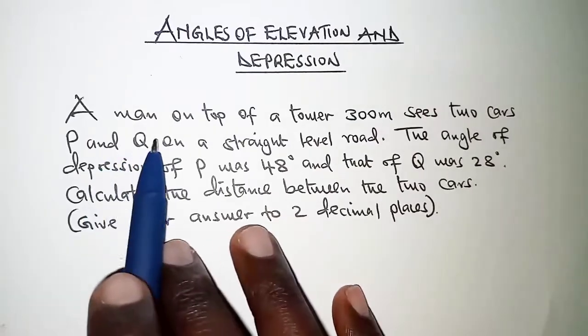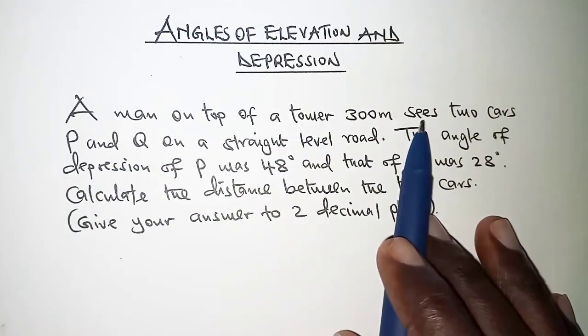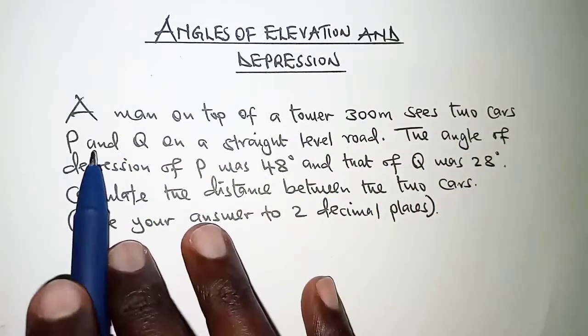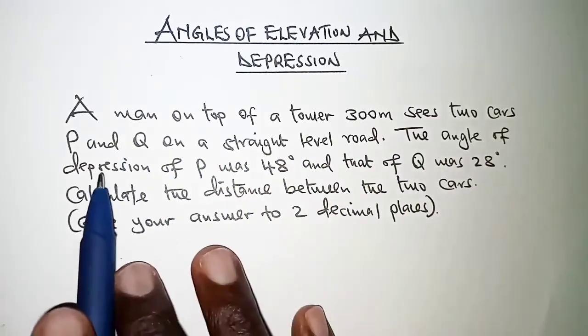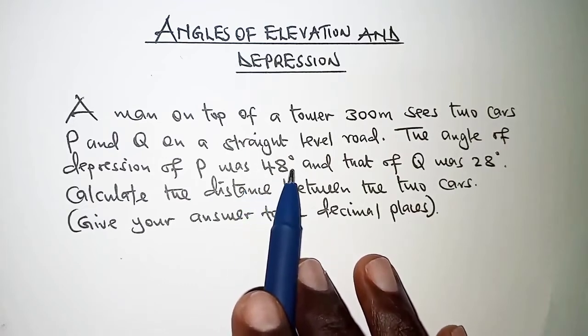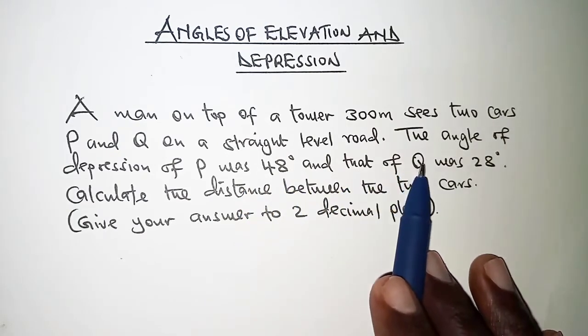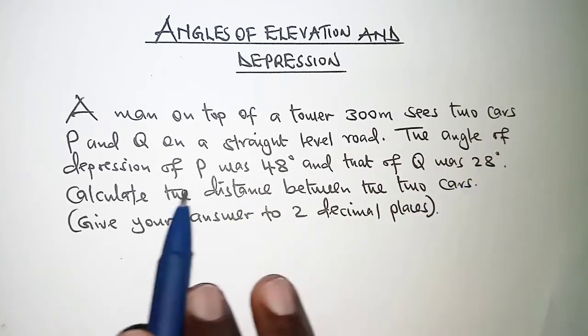So the question reads, a man on top of a tower 300 meters sees two cars P and Q on a straight level road. The angle of depression of P was 48 degrees and that of Q was 28 degrees.